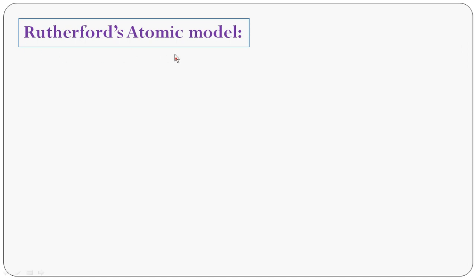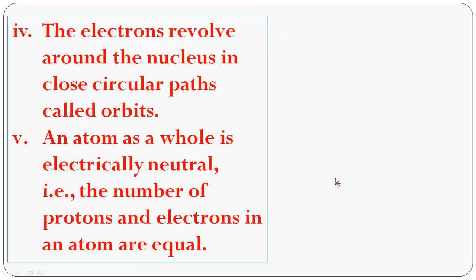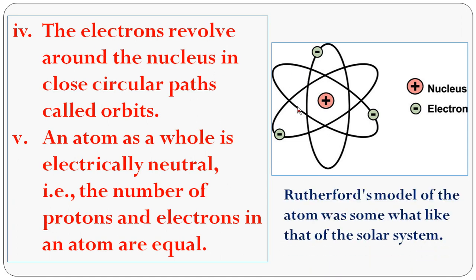The Rutherford atom model has five main points. First, the atom contains a large empty space. Second, there is a positively charged mass at the center of an atom called the nucleus. Third, the size of the nucleus is very small compared to the size of the atom. Fourth, the electrons revolve around the nucleus in a circular path, and this path is called orbits, shells, or energy levels. Fifth, an atom as a whole is electrically neutral because the number of protons and electrons in an atom are equal.